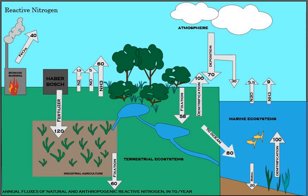While many animals, fungi, and other heterotrophic organisms obtain nitrogen by ingestion of amino acids, nucleotides, and other small organic molecules, other heterotrophs including many bacteria are able to utilize inorganic compounds, such as ammonium, as sole N-sources. Utilization of various N-sources is carefully regulated in all organisms.